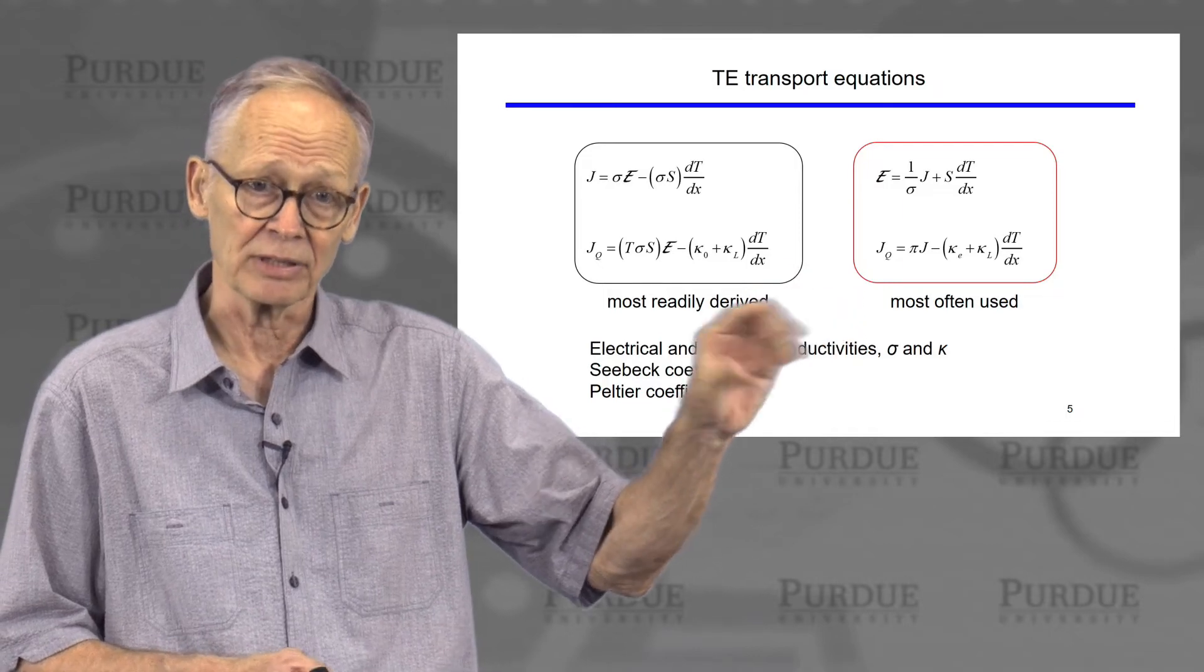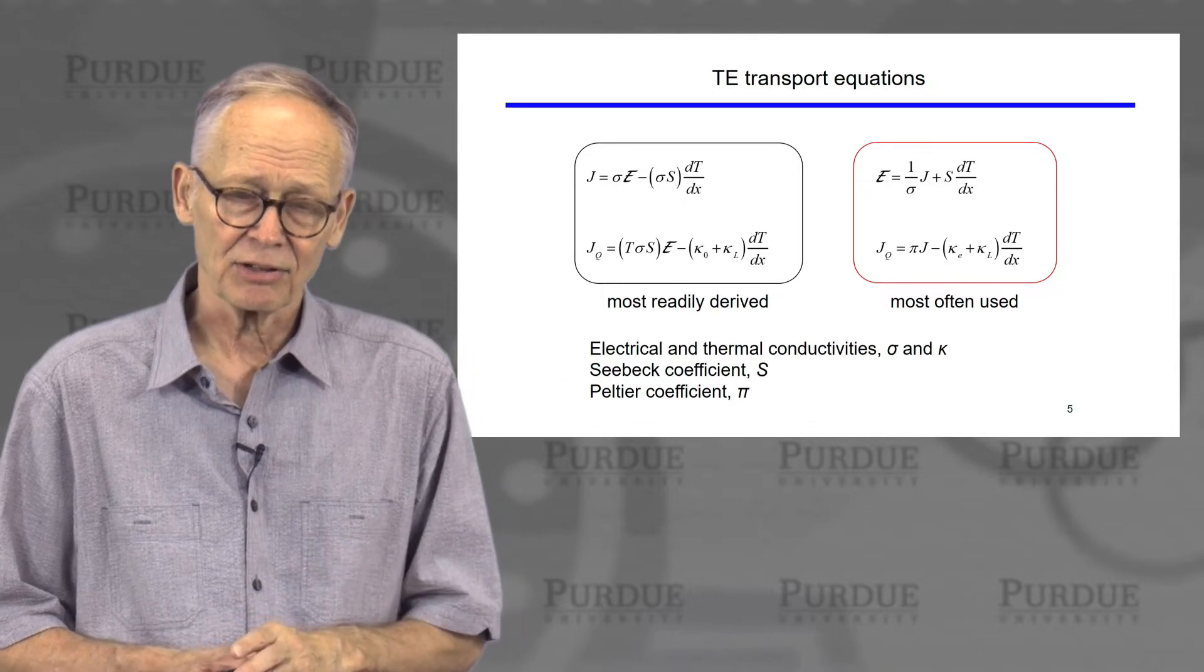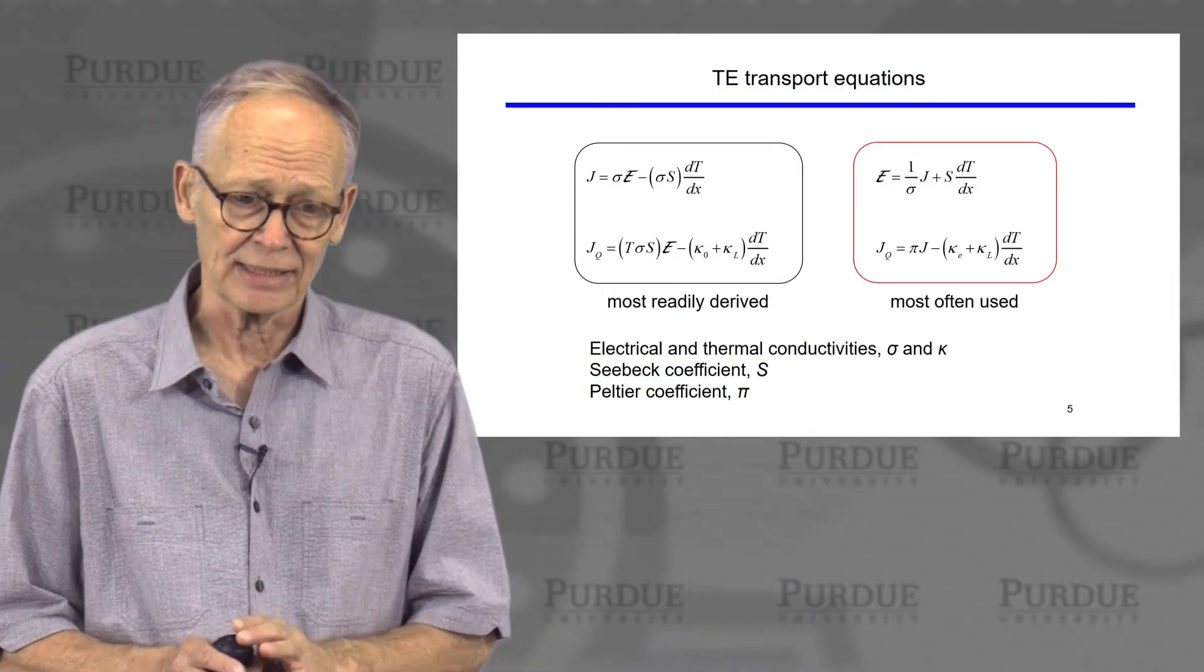The form that is most easily used or readily used, commonly used, is shown on the right, where we simply invert them. You'll see that there are five transport coefficients in these equations.